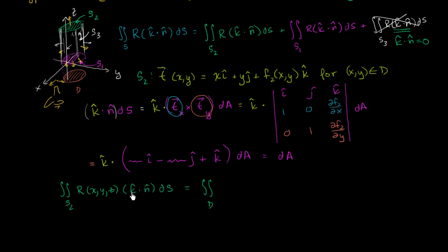And since I want to write it in terms of my parameters. I'll write it as r of x, y. And while we're on that surface, z is equal to f2. So it's x, y, and f2 of x, y. And then all of this business we just saw simplified to dA.